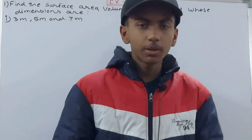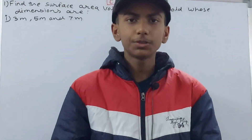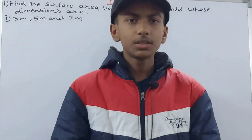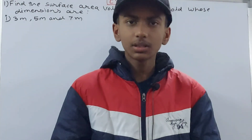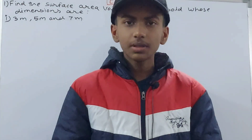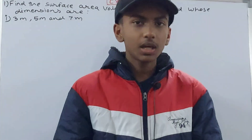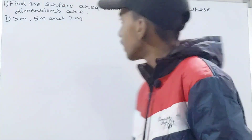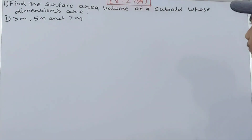Hello friends, welcome back to my YouTube channel Unlock Your Learning. In this video we are going to solve ICSE Mathematics Class 8, Chapter 27, Exercise 27A, equation number one. This is: find the surface area and volume of a cuboid whose dimensions are given.